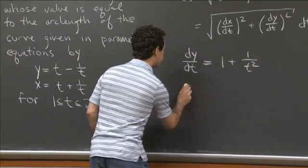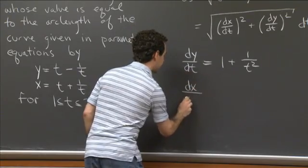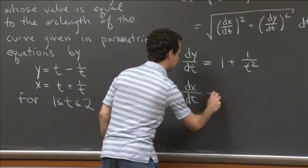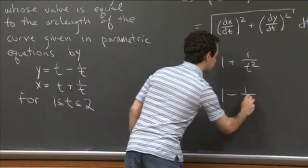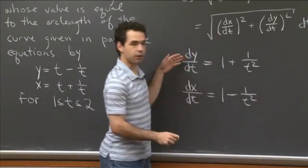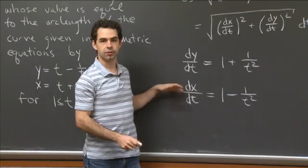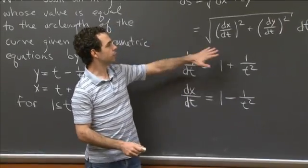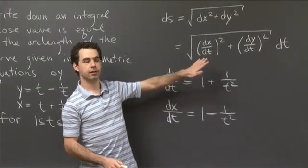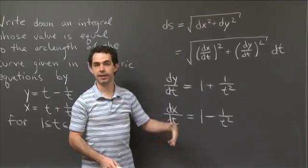And similarly, dx/dt = 1 - 1/t². So you have these two derivatives. So to compute arc length, you plug them into this formula for the element of arc length, and then you'll integrate.